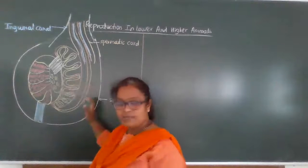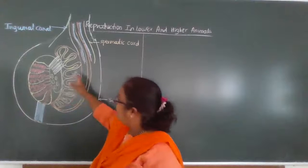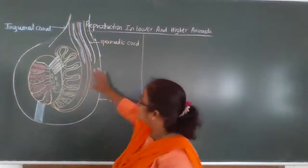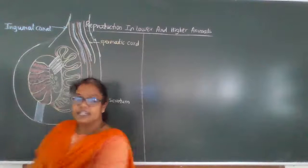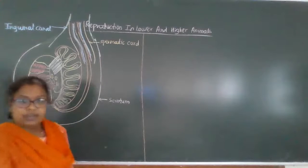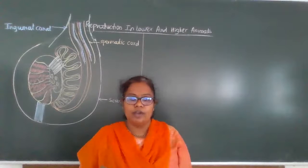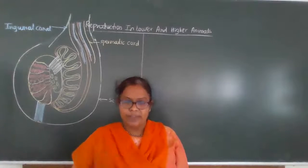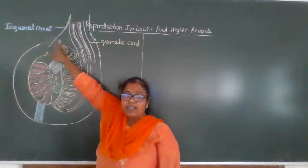Each scrotum sac contains the testis, the epididymis, then the vas deferens, the blood supply, and the nerve supply. The testis descends into the scrotum sac during the gestation period — when the baby boy is in the womb of the mother — through embryonic development, passing through the inguinal canal.